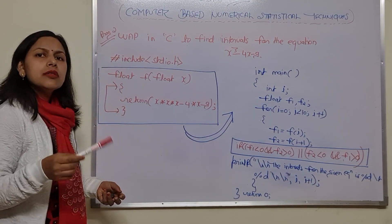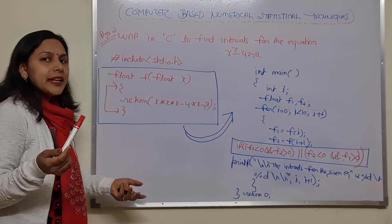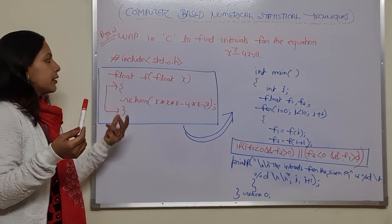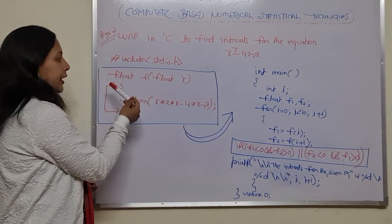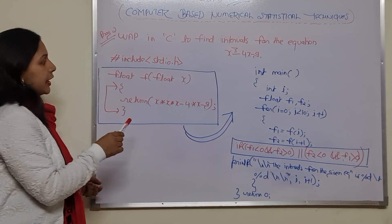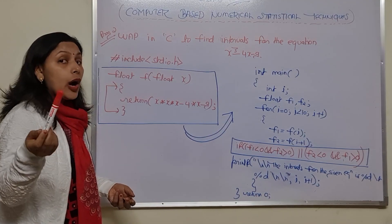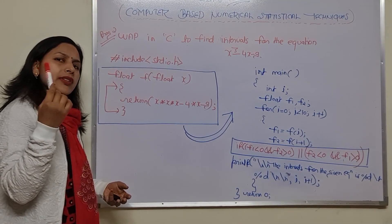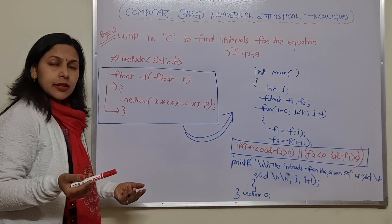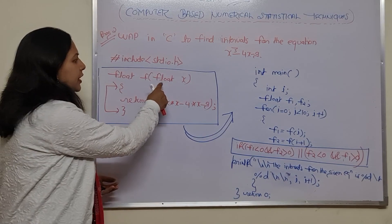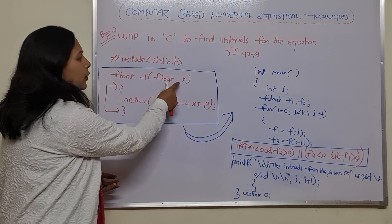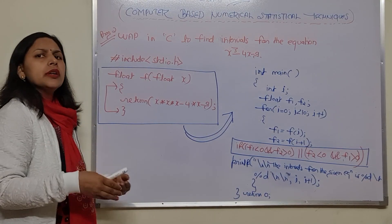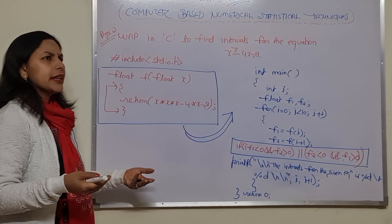Why have I taken float? Because the numbers which we would get could be in decimal form as well. So in each and every case in numerical methods, we just try to take the data type as float as well as double. I have taken one function that is float f. Within the bracket, I have passed one value — float x — because we would change the value for x to find intervals, even for floating point numbers like in the range 0.5 till 1.2.